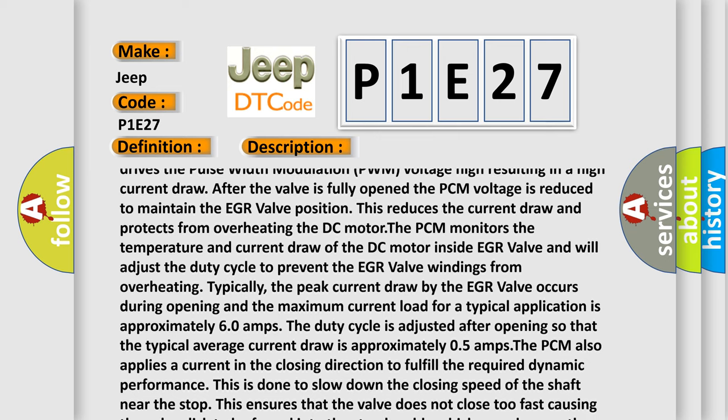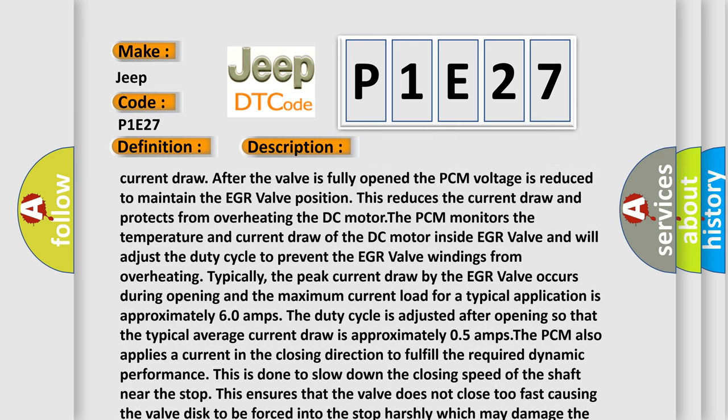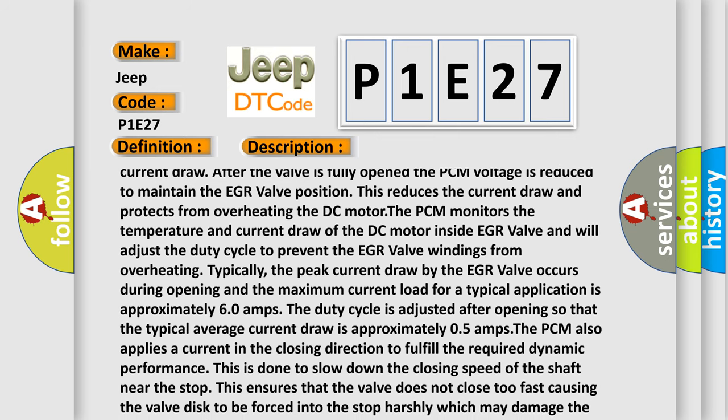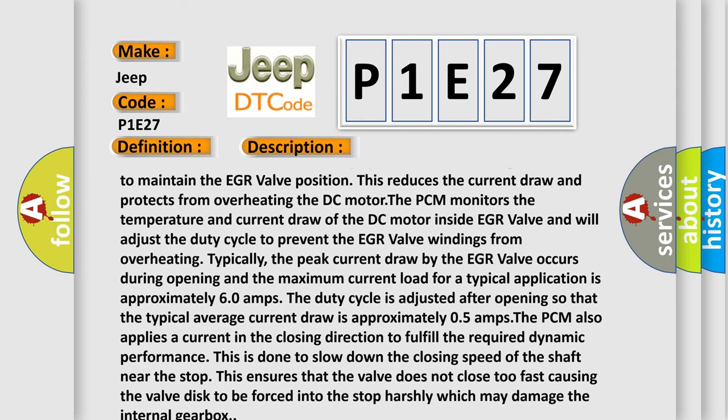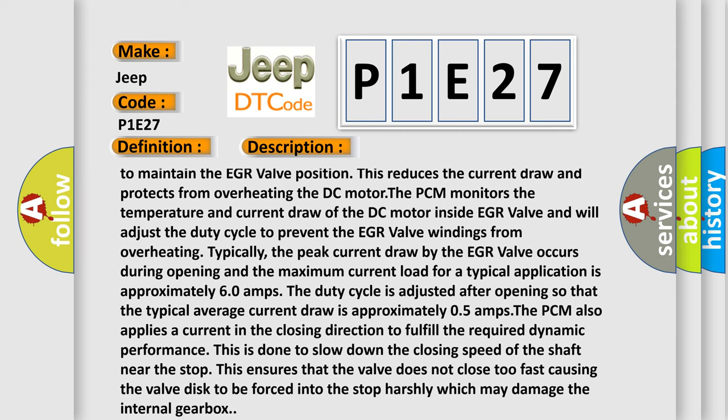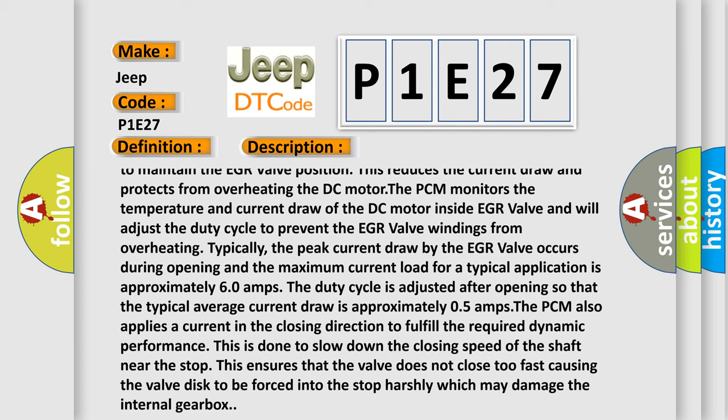Typically, the peak current draw by the EGR valve occurs during opening and the maximum current load for a typical application is approximately 6.0 amps. The duty cycle is adjusted after opening so that the typical average current draw is approximately 0.5 amps.